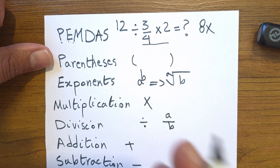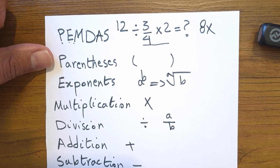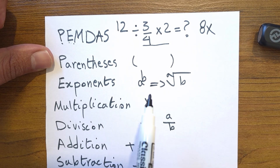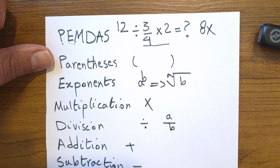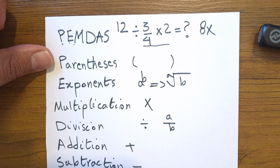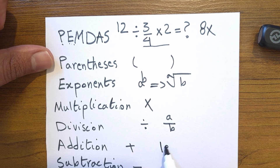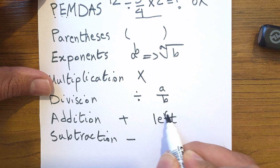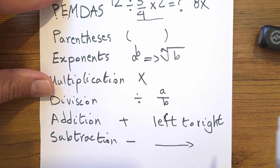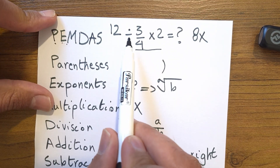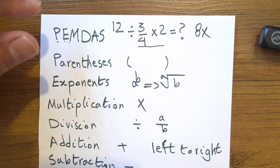It doesn't work that way. Multiplication and division have the same priority — they are processed from left to right. Addition and subtraction also have the same priority. So when operations have the same priority, you always go left to right. So whenever you see a division sign followed by multiplication, you do division first, then multiplication.